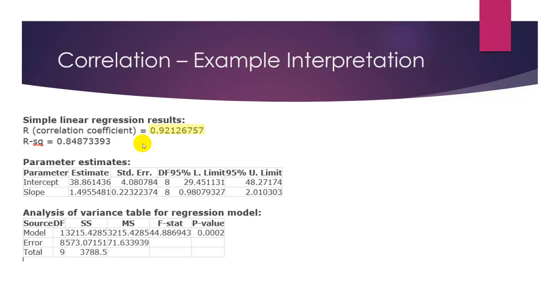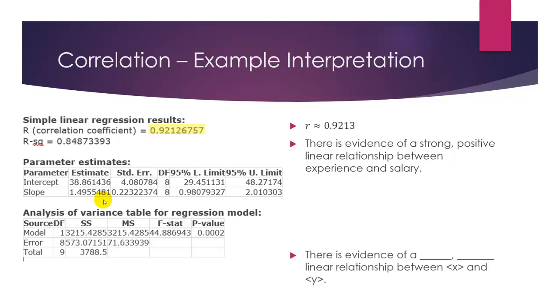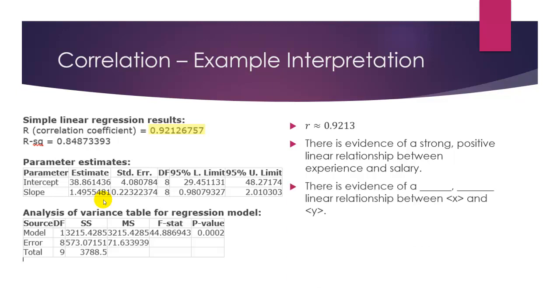So, in our example, we see the correlation coefficient at the top here, and it's positive 0.92, and we knew it had to be positive, because our slope was positive. Our r value is approximately 0.9213 due to rounding. So, since the r value is close to 1, a positive 1, we know that there's a strong, positive, linear relationship between x and y. x and y, in our example, is salary and experience.